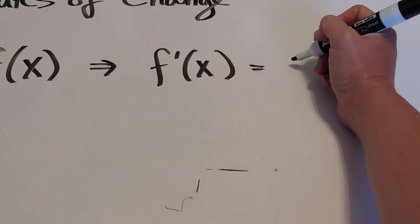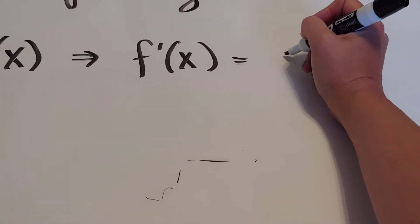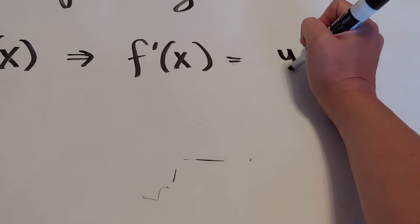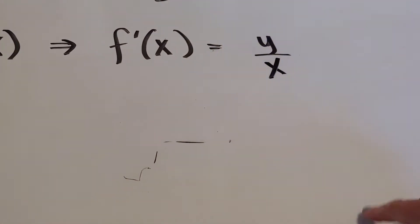So if you think about instantaneous slope, slope is rise over run, right? So as y changes, as x changes.